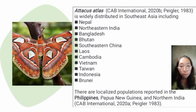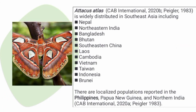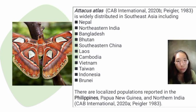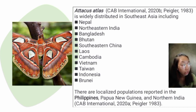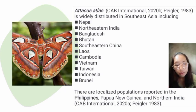The distribution of Atacus atlas is well distributed in Southeast Asia, including Nepal, Northeastern India, and so on. There are localized populations reported in the Philippines, as well as in Papua New Guinea and Northern India. In the Philippines, we have Atacus lurkini.